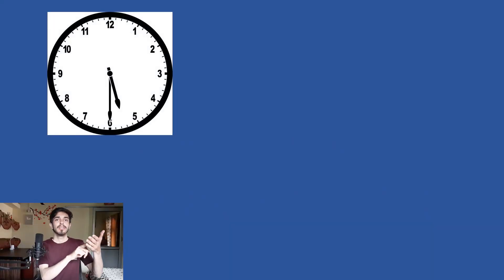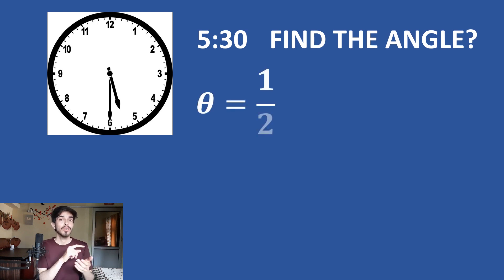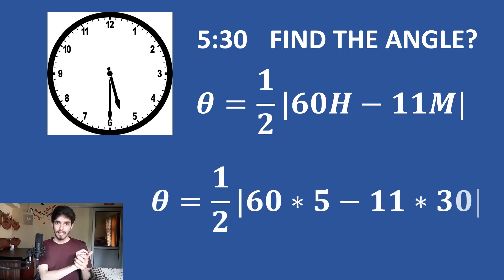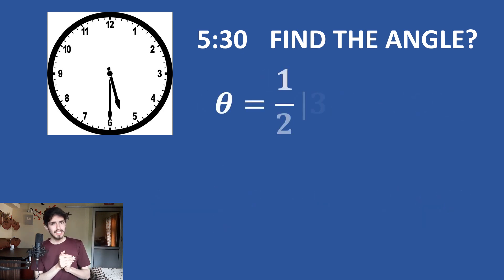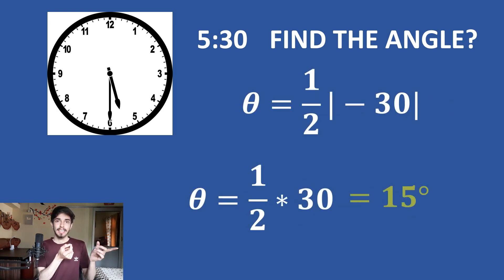The formula now only works for correct clocks. If you are given a time like 5:30 and asked to find the angle between the hour and the minute hand, use this simple formula: half of the modulus of (60h minus 11m). For 5:30, put h = 5 and m = 30. Solving this gives 15 degrees. So at 5:30, the hour hand and the minute hand make an angle of 15 degrees with each other.